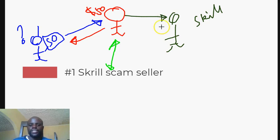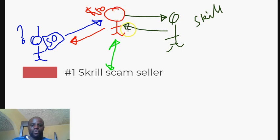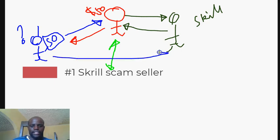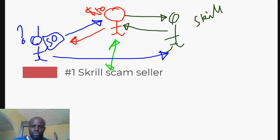What happens is: the actual SWRD seller sends the SWRD to the scammer, not to you. Meanwhile, the scammer tells you to send your money to the actual SWRD seller. So you have sent money to the seller, but the seller has sent the SWRD to the scammer — creating a triangle. You never receive the SWRD.